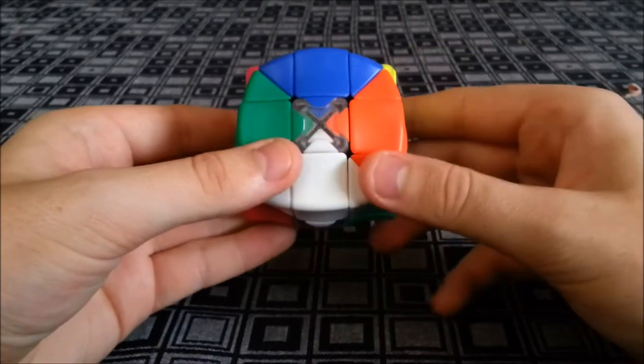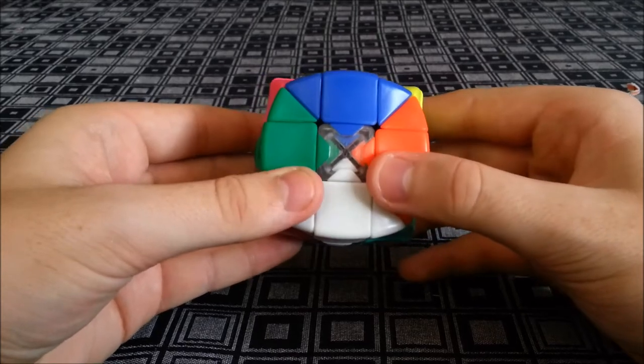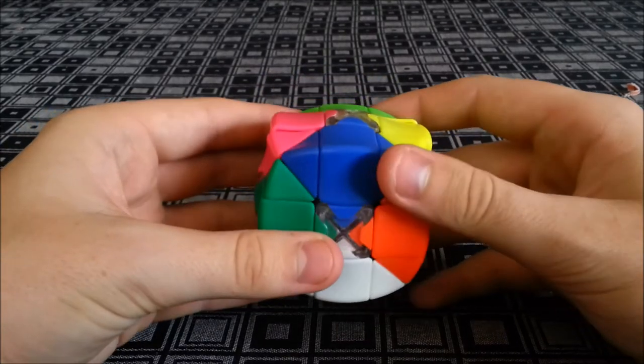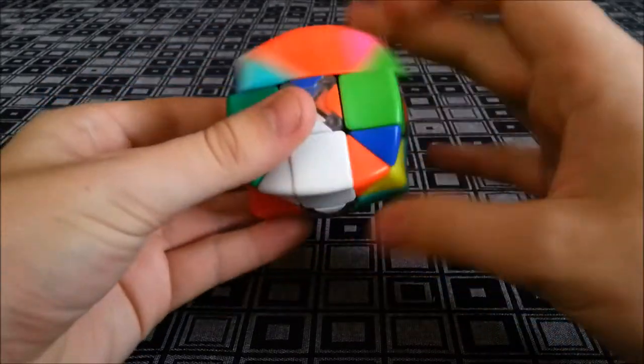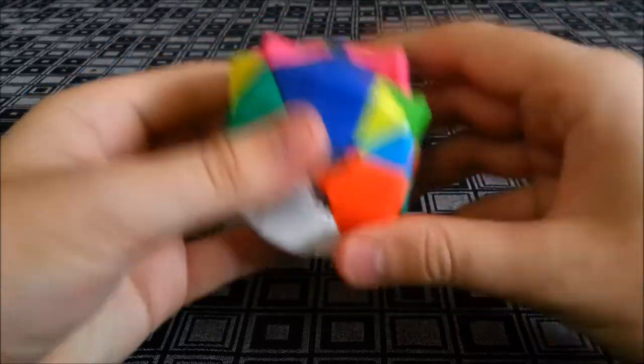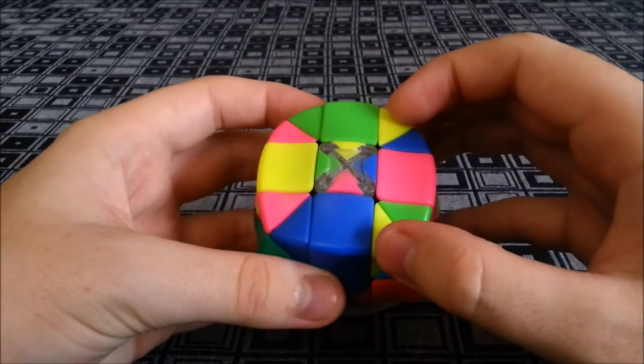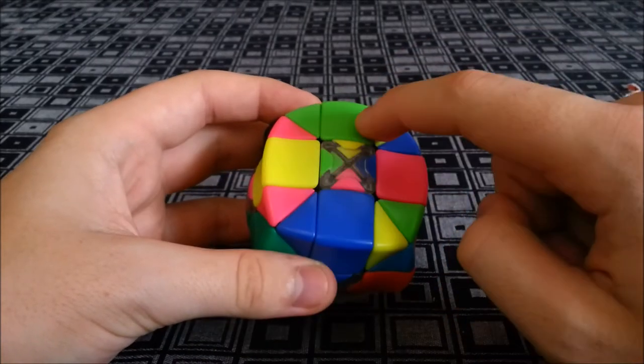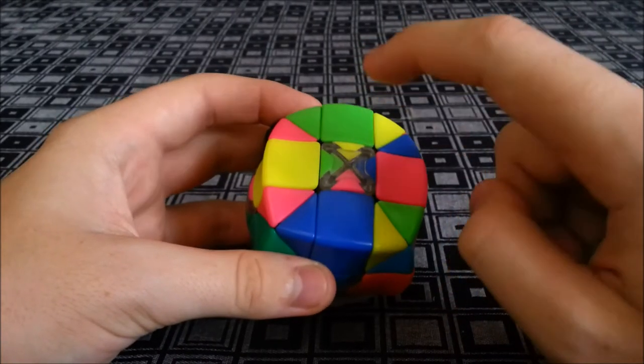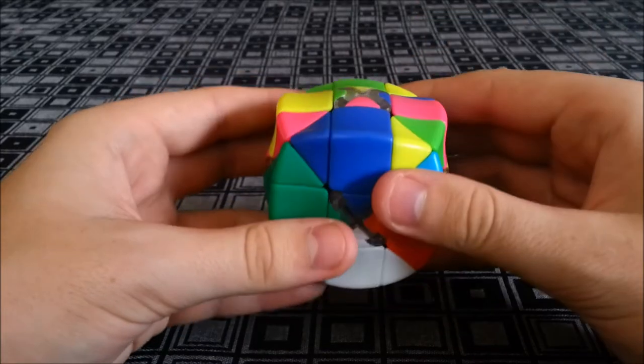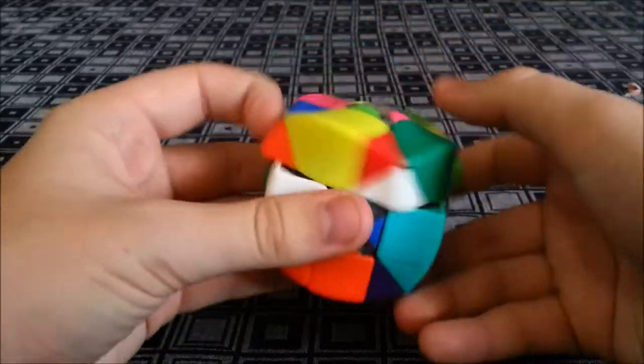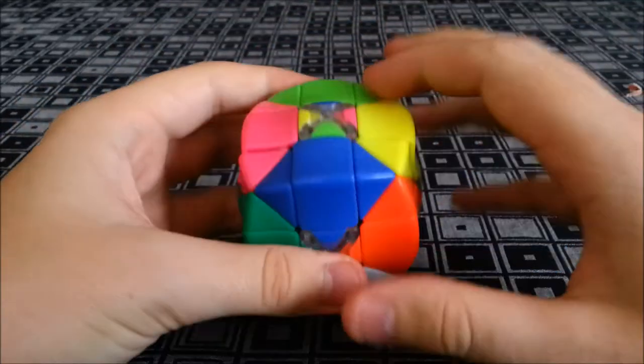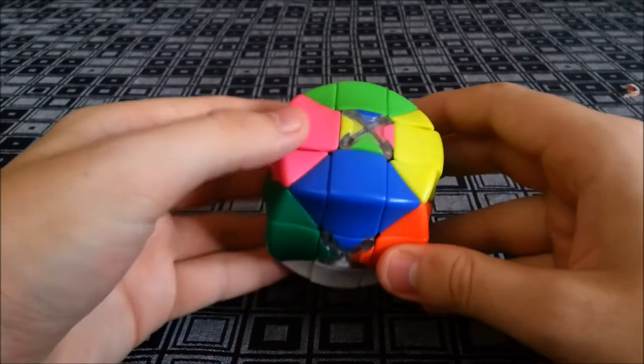The center is probably what makes this cube more difficult than a standard 3x3. If I do a t-perm, you can see these two colors have changed and these two colors have changed, but these two greens are now misaligned and this green piece hasn't been affected by the t-perm. If I do another t-perm, we've now got a parity case.